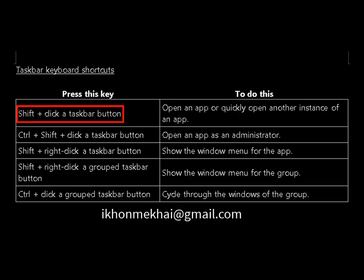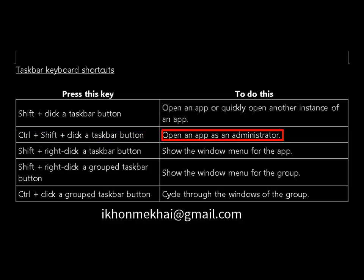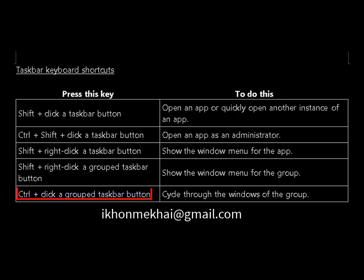Shift plus click a taskbar button will open an app or quickly open another instance of an app. Ctrl plus shift plus click a taskbar button will open an app as an administrator. Shift plus right click a taskbar button will show the window menu for the app. Ctrl plus click a group taskbar button will cycle through the windows of the group.